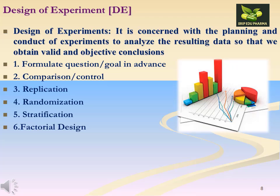First is to formulate the goals that we want to achieve in advance. Then comparison or control — we should have a standard. Then replication, then randomization, then stratification, and finally factorial design — determining what type of design we have to apply in the design of experiment.